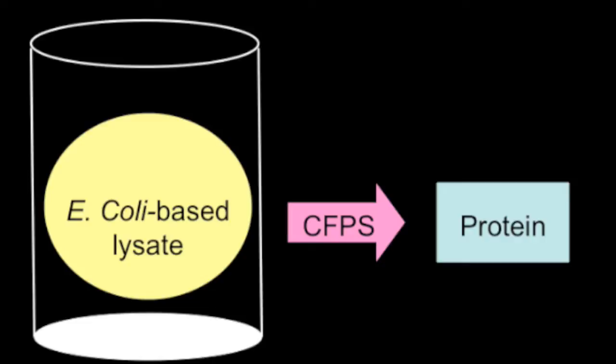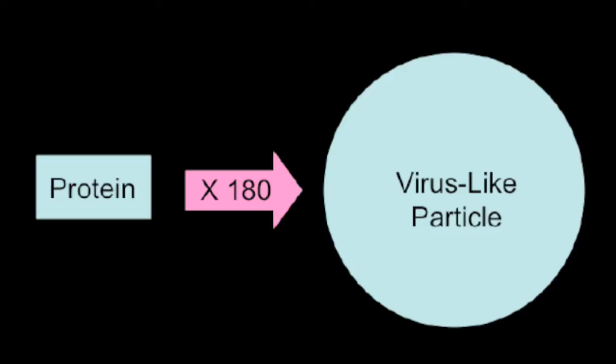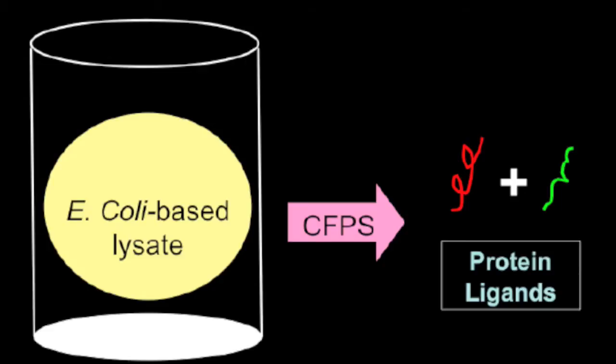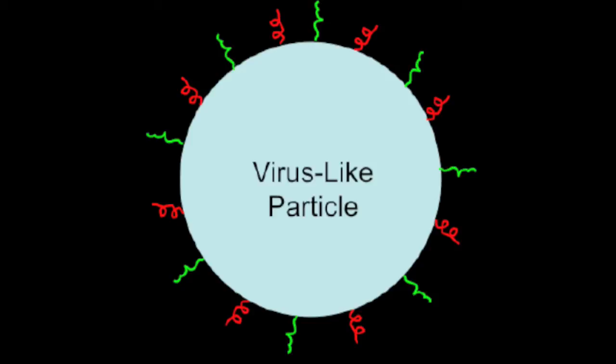After adding the necessary factors for protein synthesis to the E. coli-based lysate, Dr. Schwartz's lab uses this system to make a simple protein. 180 copies of this protein then self-assemble to form a virus-like particle. They also use cell-free protein synthesis to make protein ligands which can stimulate an appropriate immune response in the body. They attach these ligands to the proteins comprising the virus-like particle to complete the assembly process. The final product is an effective vaccine because it stimulates the same immune response that a natural virus does without the threat of infection.